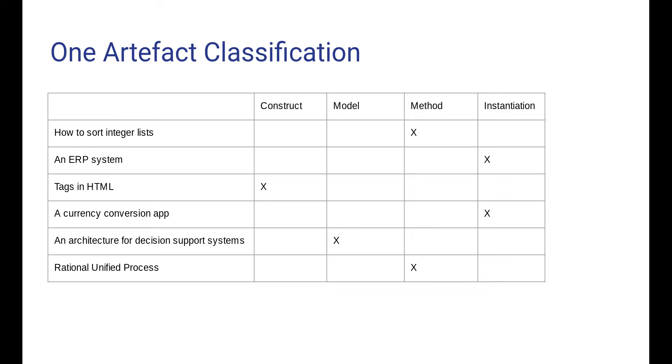Well, one artifact classification may be the most basic one for this course, is to divide artifacts into constructs and models and methods and instantiations. Where constructs are small atomic pieces, models are aggregations of several constructs and relationships between them, and methods are ways of working, and instantiations are working systems that can be directly used in some practice.